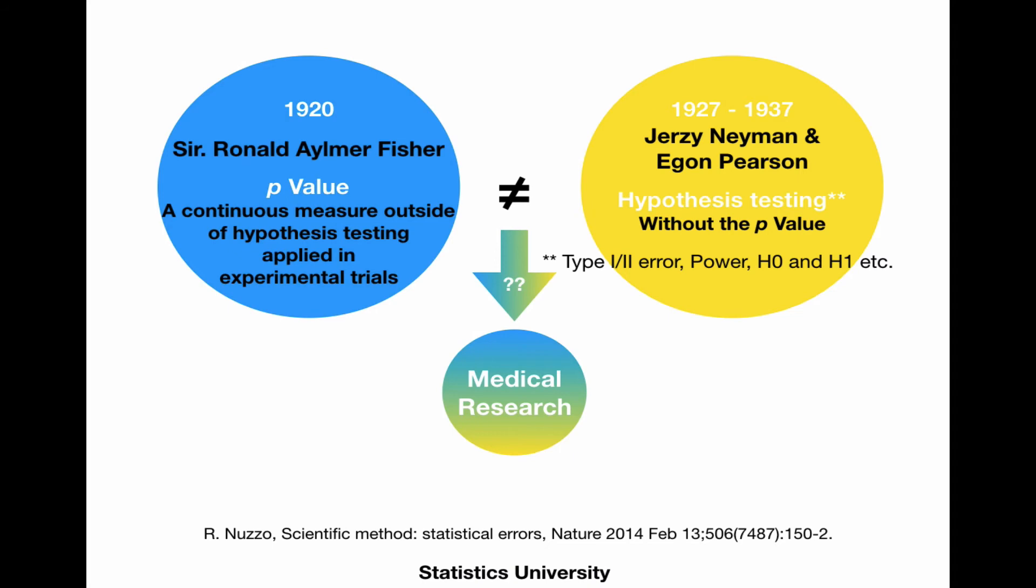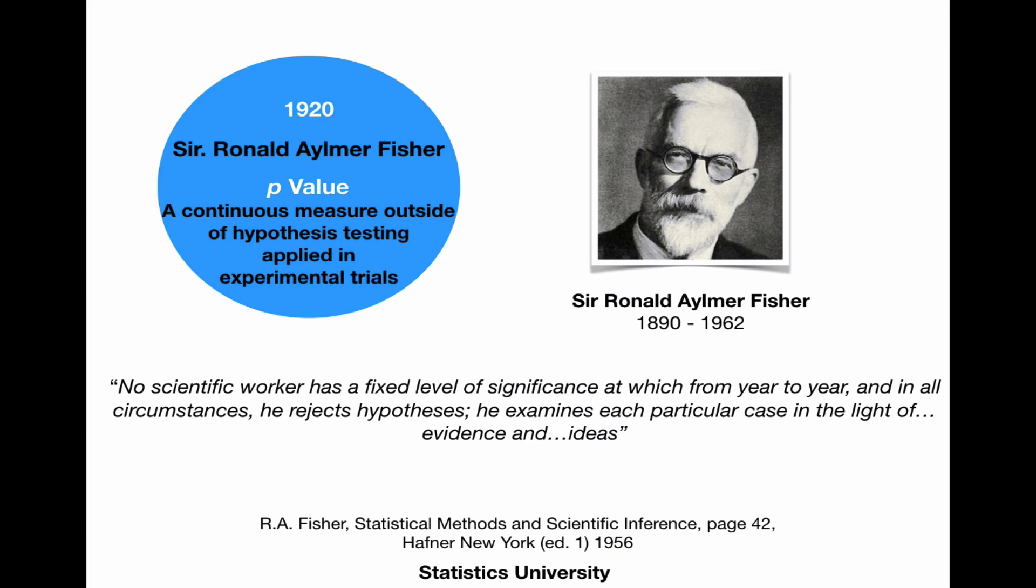Unfortunately, a lot of medical researchers just use an arbitrary cutoff of 0.05 for the p-value to either reject the null hypothesis or to not reject it and thus accept the alternative hypothesis. Yet Sir Ronald Elmer Fisher himself said that no scientific worker has a fixed level of significance at which from year to year and in all circumstances he rejects hypotheses. He examines each particular case in the light of evidence and ideas.